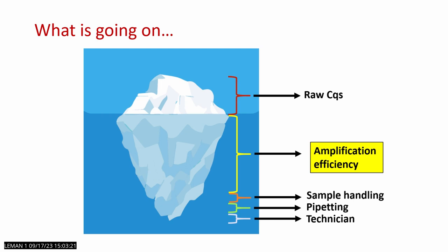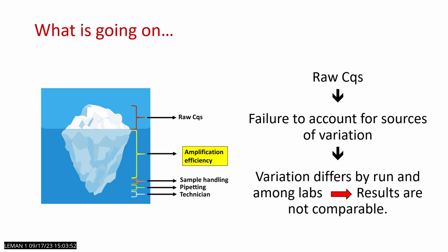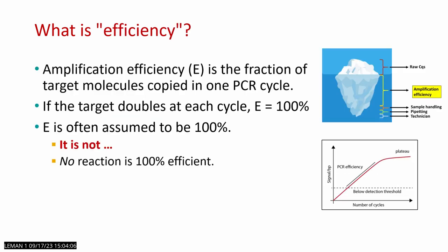If we think of our PCR results in terms of the iceberg analogy, the tip of the iceberg is our raw EQ. Below the waterline, we have all the sources of variation that influence the final result — things common among testing platforms like template handling and pipetting, but also one unique to real-time PCR: amplification efficiency. When we report raw EQs, we fail to account for those sources of variation, which differ run to run and lab to lab, making results not comparable.